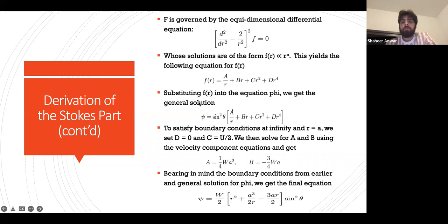Substituting f(r) into the equation φ, we get the general solution: φ = sin²θ * (a/r + b*r + c*r² + d*r⁴).